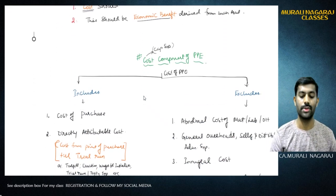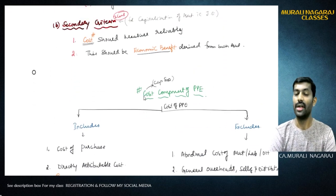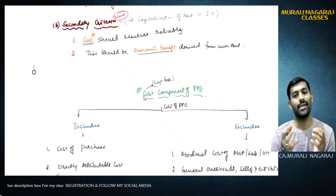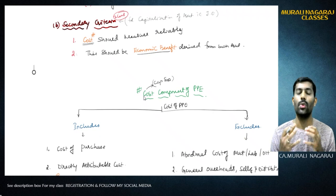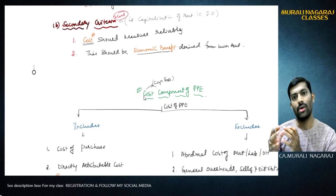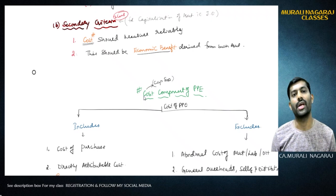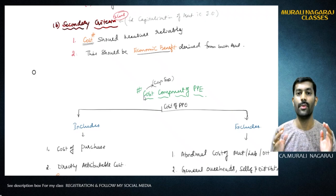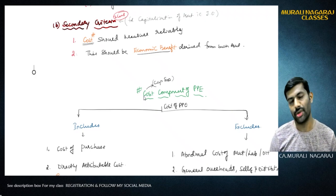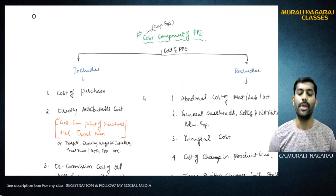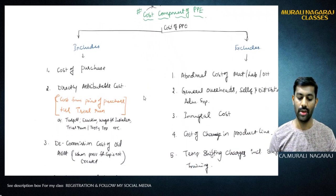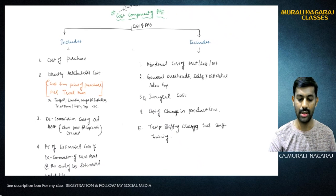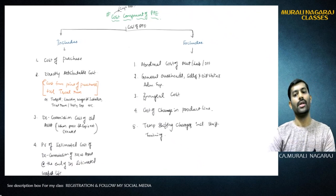In the cost component, the second criteria is that cost should be measured reliably. This raises the question: what components are to be included in cost and what are not? Whatever I paid from my pocket - is that the cost, or should I include other components? That's what we are going to discuss. The cost of PPE includes four components and excludes five components.